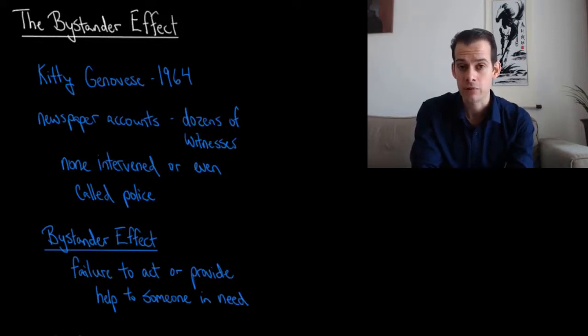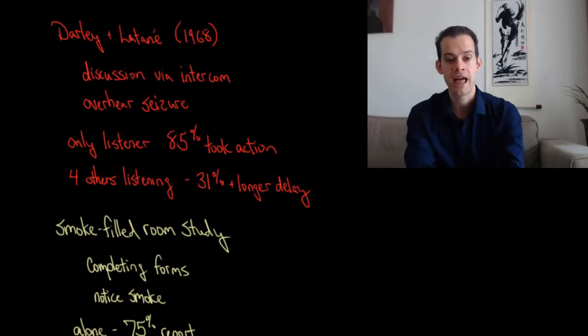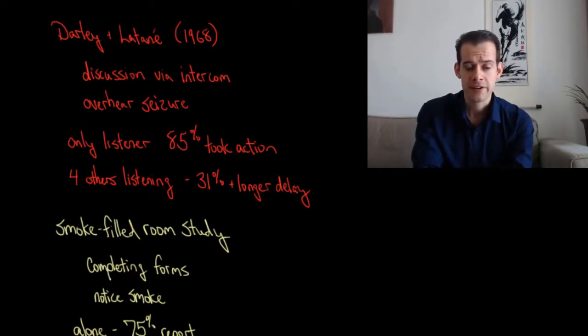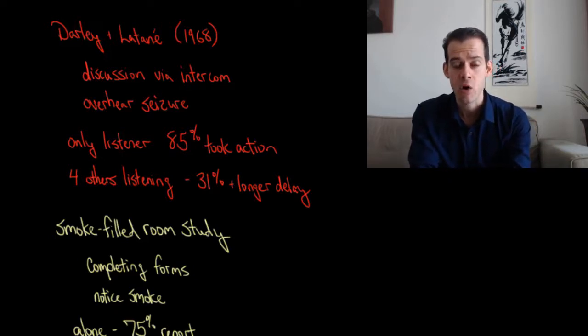Unfortunately, we have other real-life examples of this bystander effect and we also have laboratory evidence supporting this idea that in some situations people fail to act. This brings us to a study by John Darley and Bibb Latane published in 1968 where participants engaged in a discussion via intercom. So a participant was alone in a room using an intercom to participate in this discussion and during the discussion they overhear another participant having a seizure.